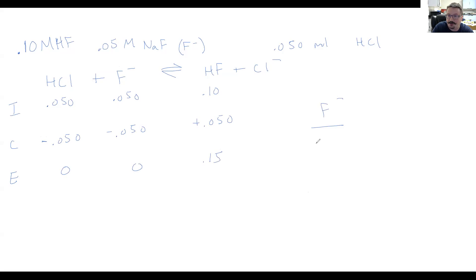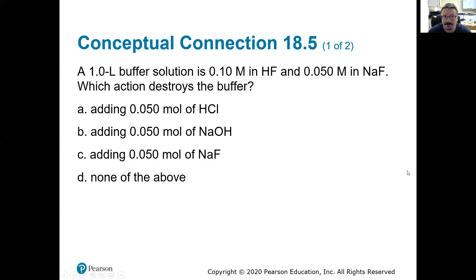So if we go back to our ratio, what do we have now? We have zero over 0.15. Well, is that outside of the range of 0.1 to 10? Yes, it is. In this case, this buffer is no longer effective. Adding that much HCl is going to use up all of that conjugate base. And more importantly, it's going to take us outside of that 0.1 to 10 range. So that's why that would be the answer here.